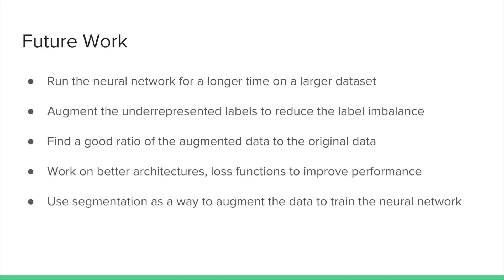For future work with more time, we could run the neural network on a larger dataset. We can also augment the underrepresented labels to reduce the label imbalance and find a good ratio between augmented and original data. We can also explore better architectures and loss functions. With more computing power, we may be able to use segmentation to augment the data to train the neural network.